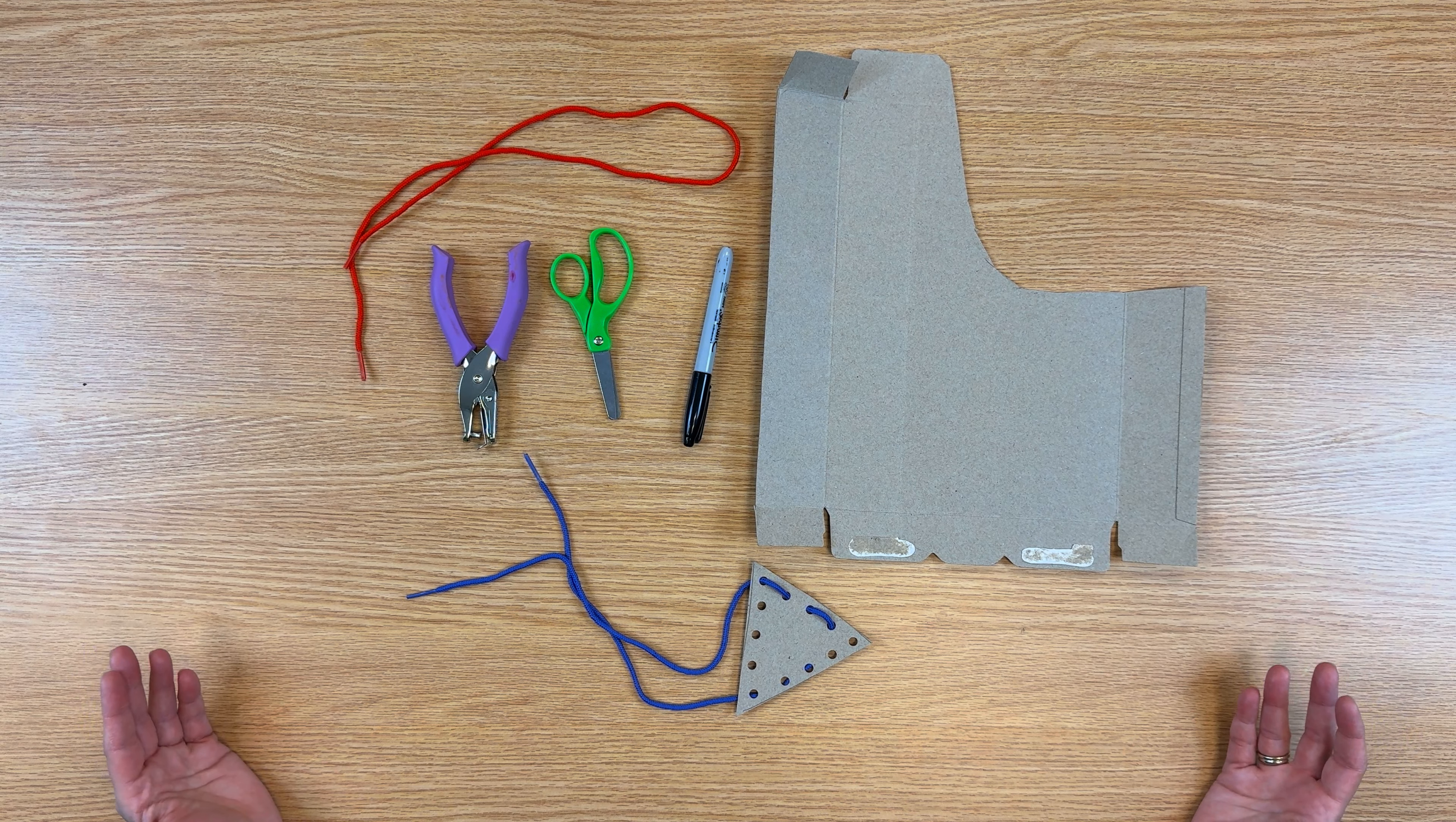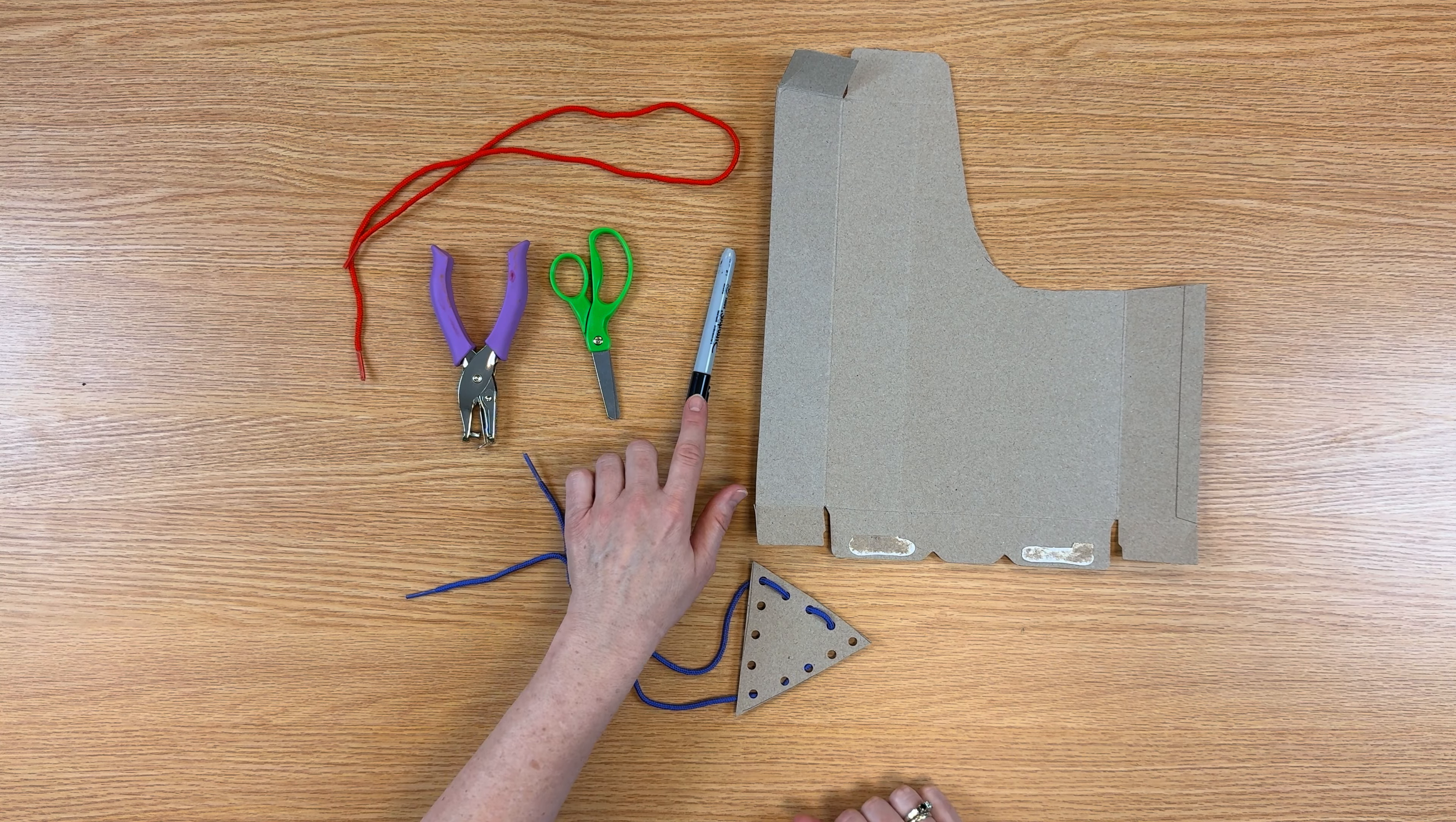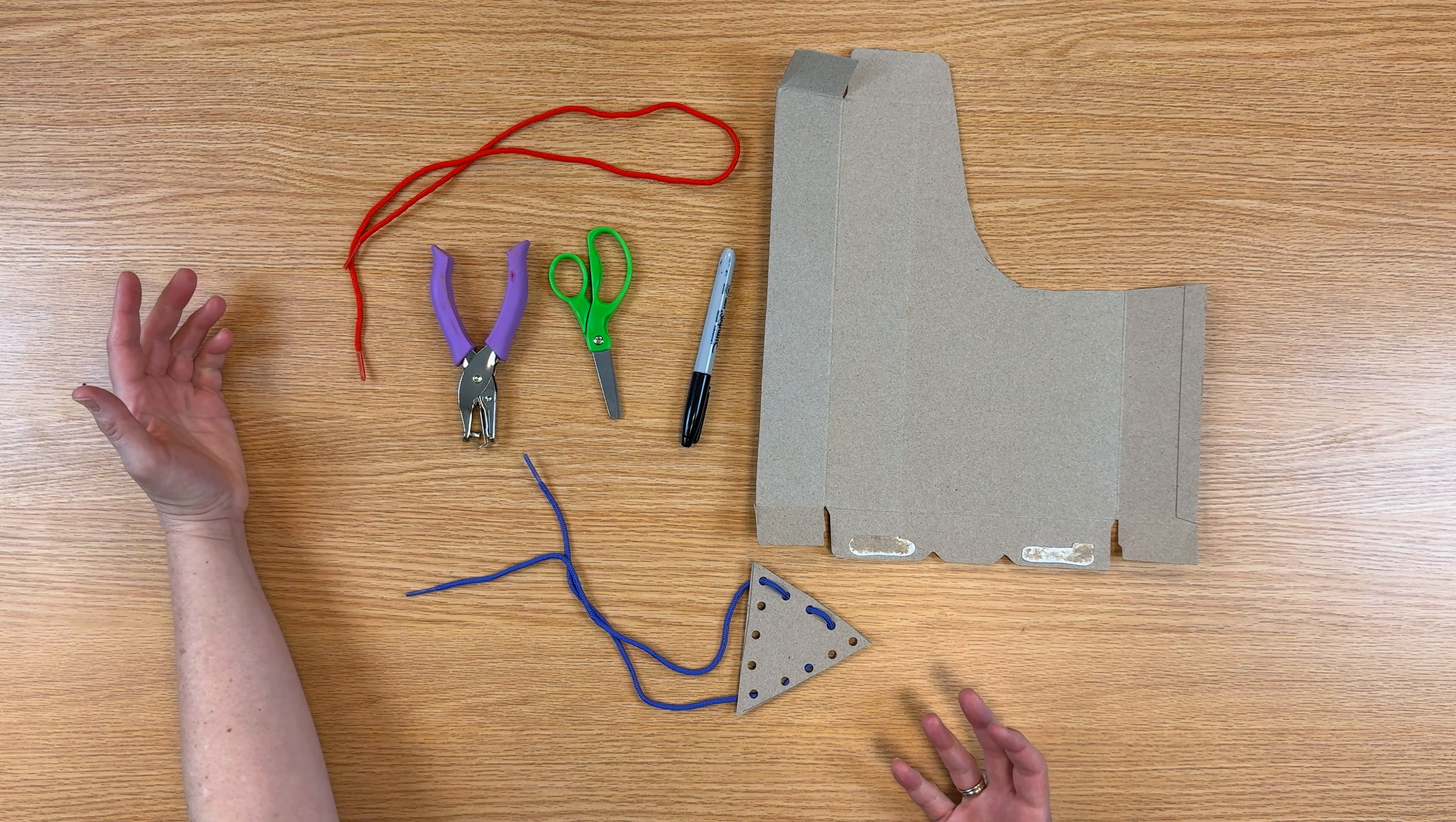So today we're making simple lacing cards out of everyday items. All you need is a cereal box or cracker box, a marker, some scissors, a hole punch if you have one available, and a piece of yarn or a shoelace and that's it.